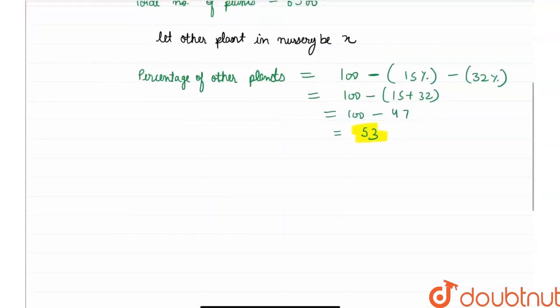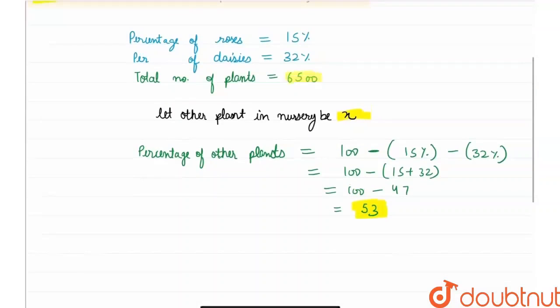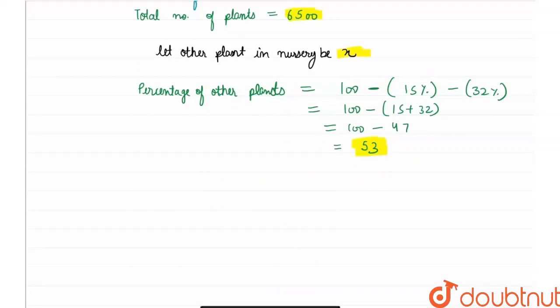Therefore, we have the percentage of other plants and we have the total plants. Therefore, from these three things I can write that 53 percent of total plants, total plants are 6500, is equal to x.